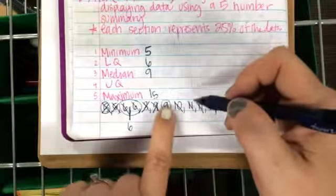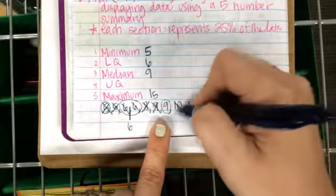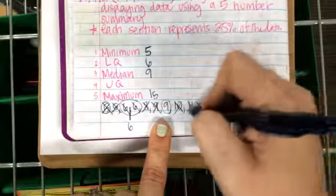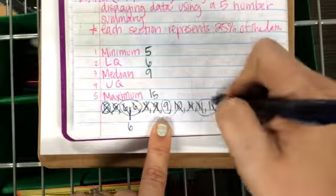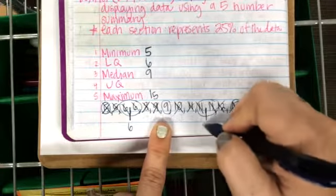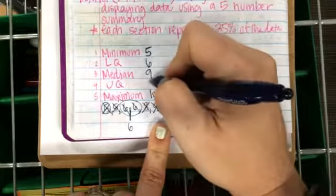For the upper quartile, I look at the data above the median. I have two elevens in the middle, so the upper quartile is eleven.